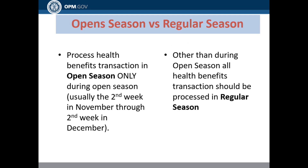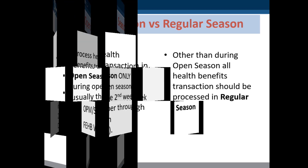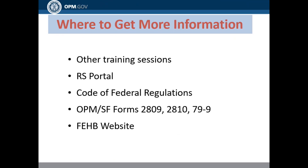Open season versus regular season: health benefits transactions are processed in open season only during open season, usually the second week in November through the second week in December. All other health benefits transactions should be processed in regular season. For more information, resources include other training sessions, our portal, the Code of Federal Regulations, OPM forms including the SF 2809, 2810, and 79-9, and the FEHB website.